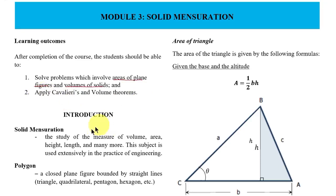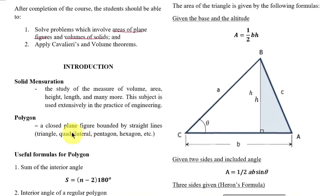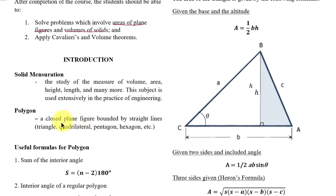For our introduction: solid mensuration is the study of measures of volume, area, height, length, and many more. This subject is used extensively in the practice of engineering. Then, what is a polygon? A polygon is a closed plane figure bounded by straight lines — for example, triangle, quadrilateral, pentagon, hexagon, etc.